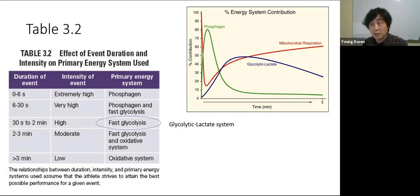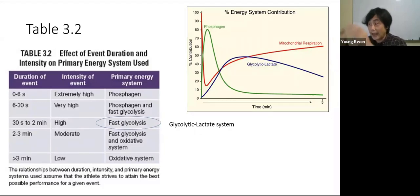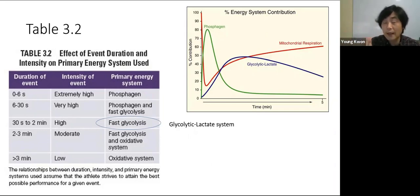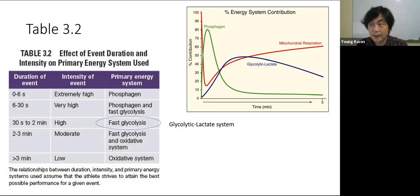This is why today's lab activity uses treadmill all-out exercise from 30 seconds to 1 minute and 30 seconds — to stress the lactate formation system. After 2 minutes of exercise, the oxidative/mitochondrial system becomes increasingly important. Our lab activity is designed around this understanding of energy system duration zones.